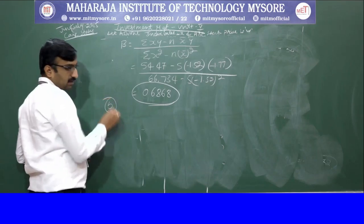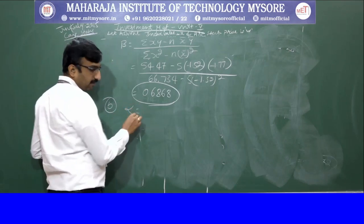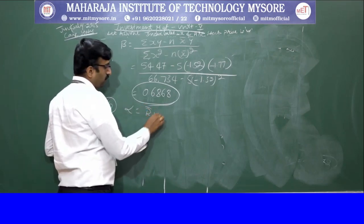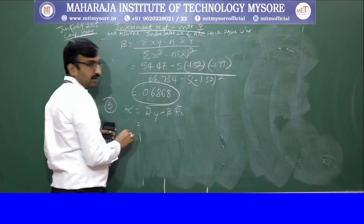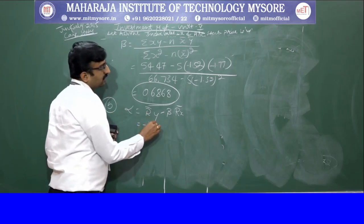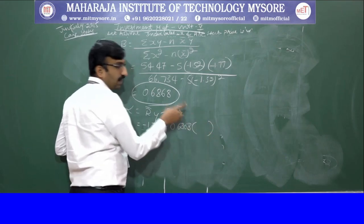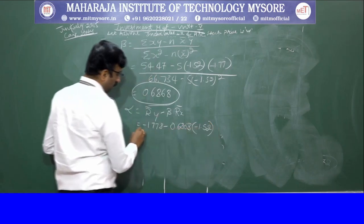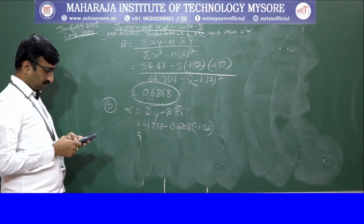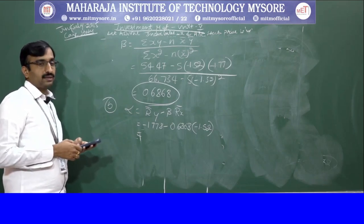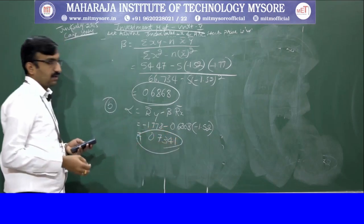Second question: calculate alpha and establish the Characteristic Regression Line. Alpha formula: α = ȳ − β·x̄. Here ȳ = minus 1.778, β = 0.68, x̄ = minus 1.52. So alpha = minus 1.778 − (0.68 × minus 1.52) = 0.7341.